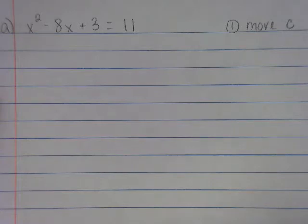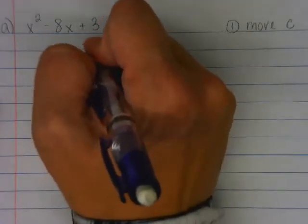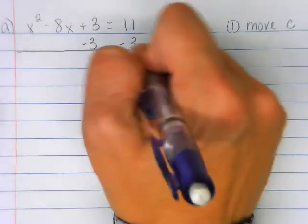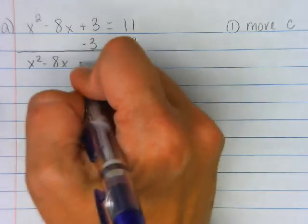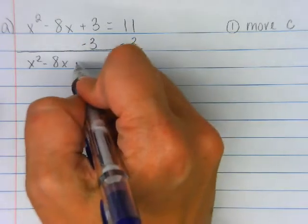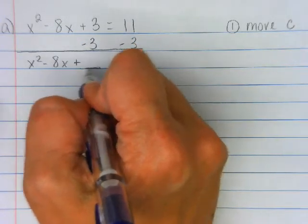We're going to minus three on both sides. So we get X squared minus 8X and I'm going to leave a blank. I got to put, it's always going to be plus a blank.